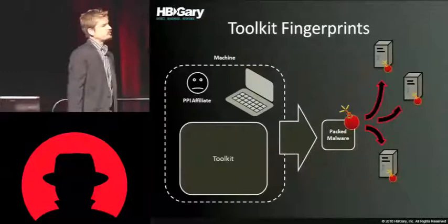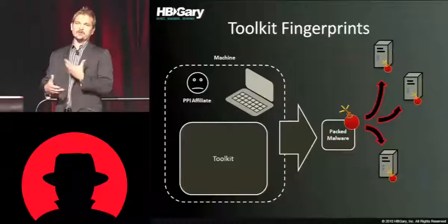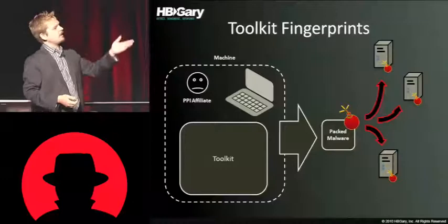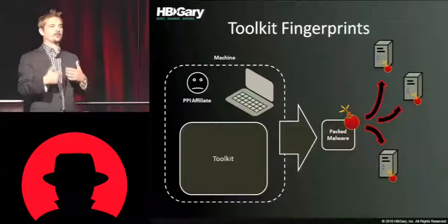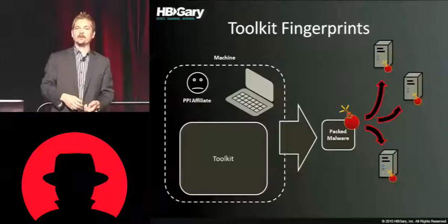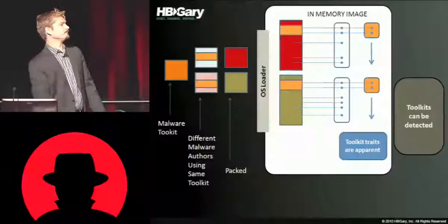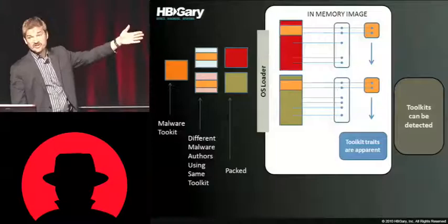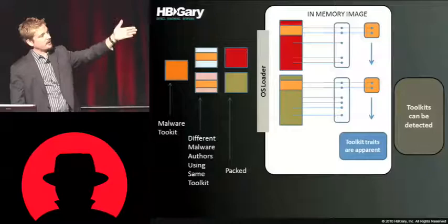Now, toolkits — Poison Ivy comes to mind. These are toolkits that can build a malware program for people who don't have the coding skills or don't have the time to write the code themselves. These are actually strongly fingerprintable. When you have a toolkit that produces malware, all the things produced tend to look alike. So it's easy to say, oh, this is a Poison Ivy variant, or whatever remote access tool they're using. Different malware authors all use the same toolkit, producing different binaries, but the parts of the toolkit that are expressed in physical memory can be extracted.